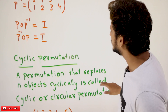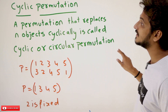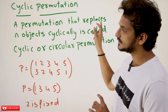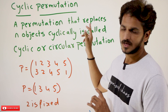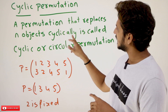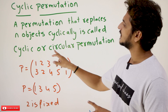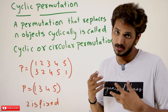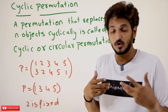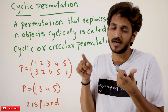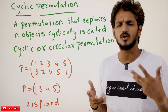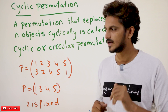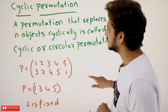Now coming to the next concept: cyclic permutation. A permutation that replaces n objects cyclically is called a cyclic or circular permutation. With an example, we are going to understand it better.